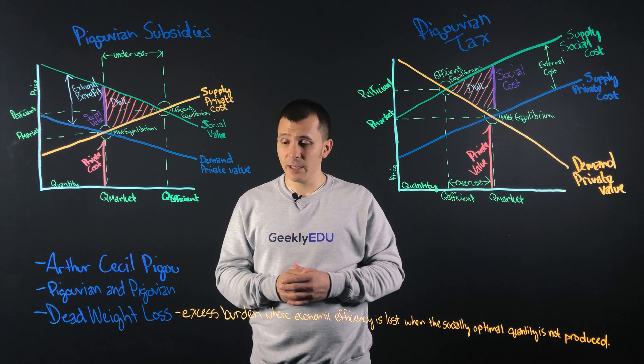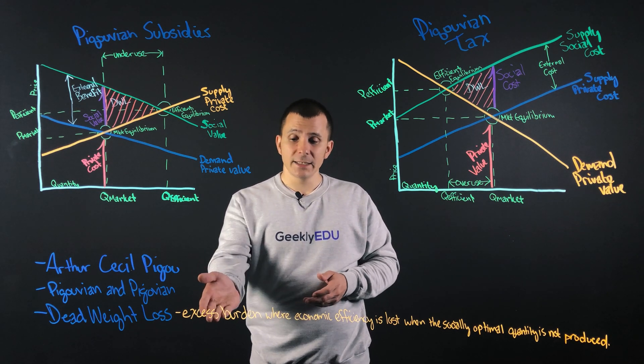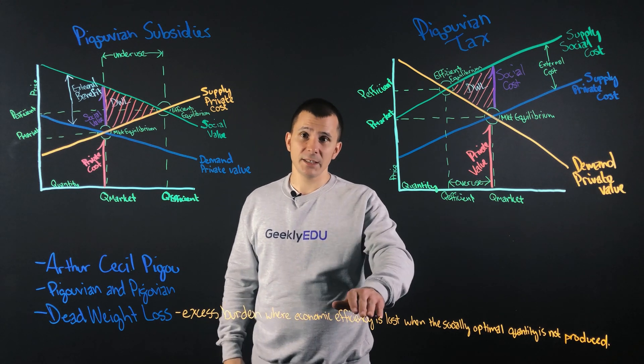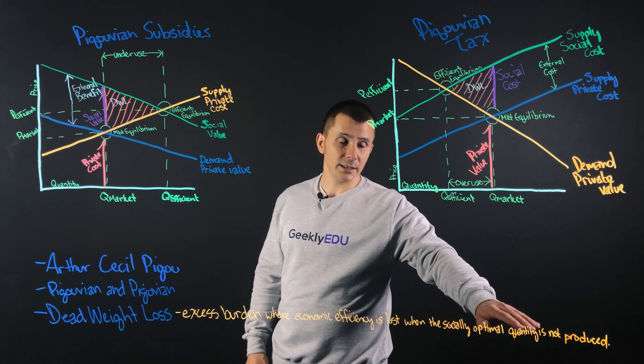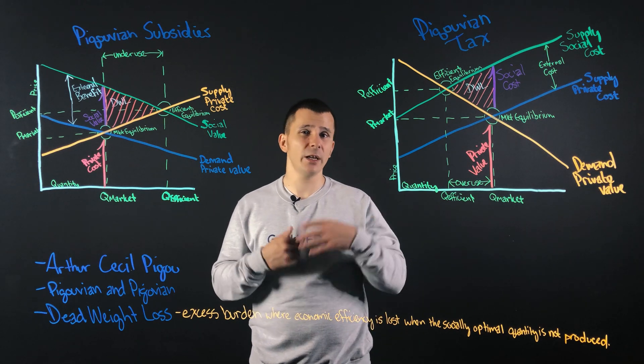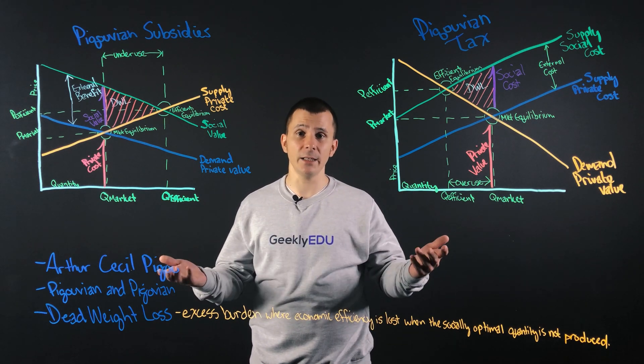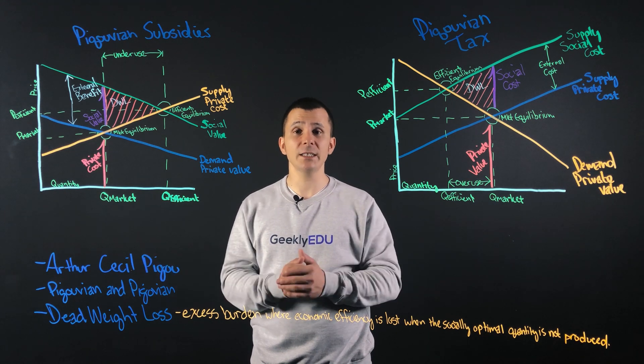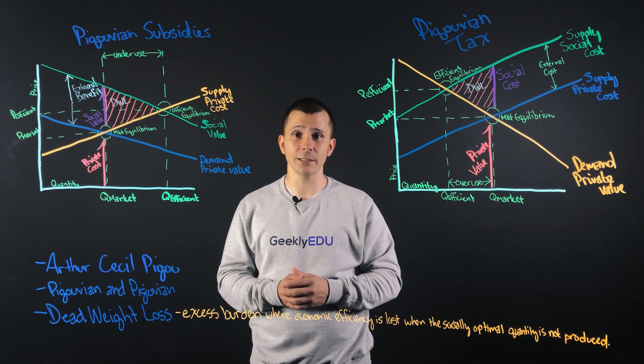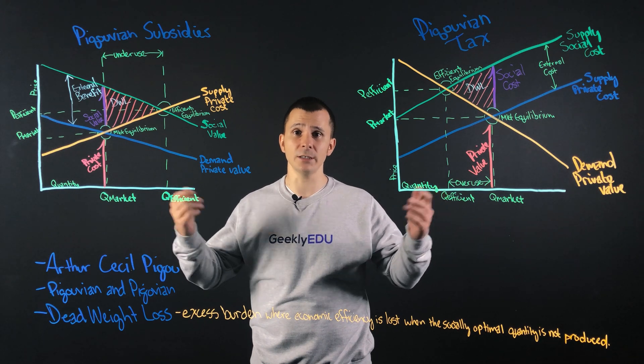Deadweight loss, for those that don't know, is an excess of burden where economic efficiency is lost when socially optimal quantity is not produced. When it comes to the Pigouvian tax and Pigouvian subsidies, we can avoid and mitigate that altogether. So let's get started and talk about these two systems and how they work and how they increase market efficiency.